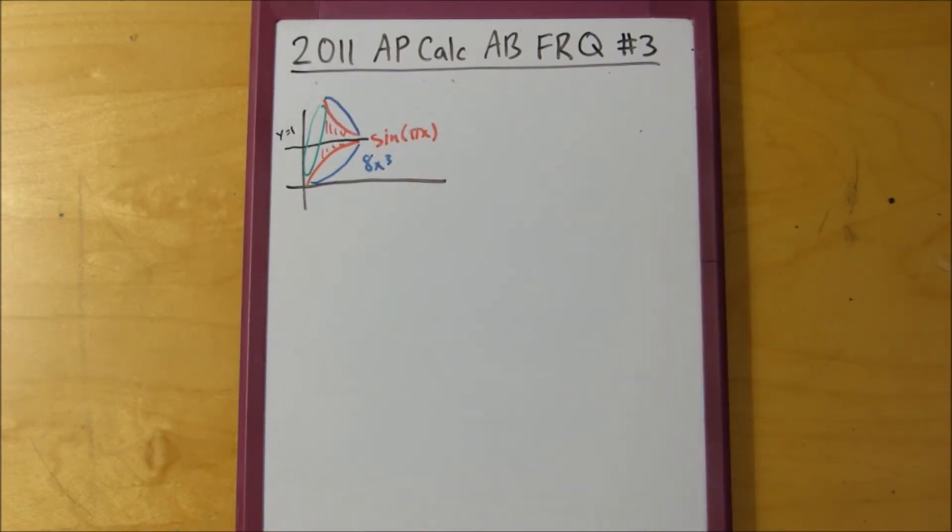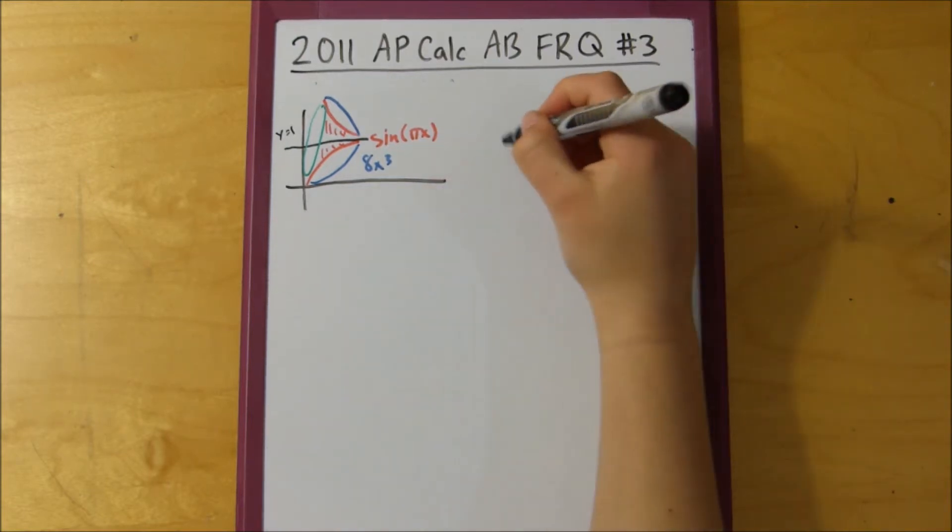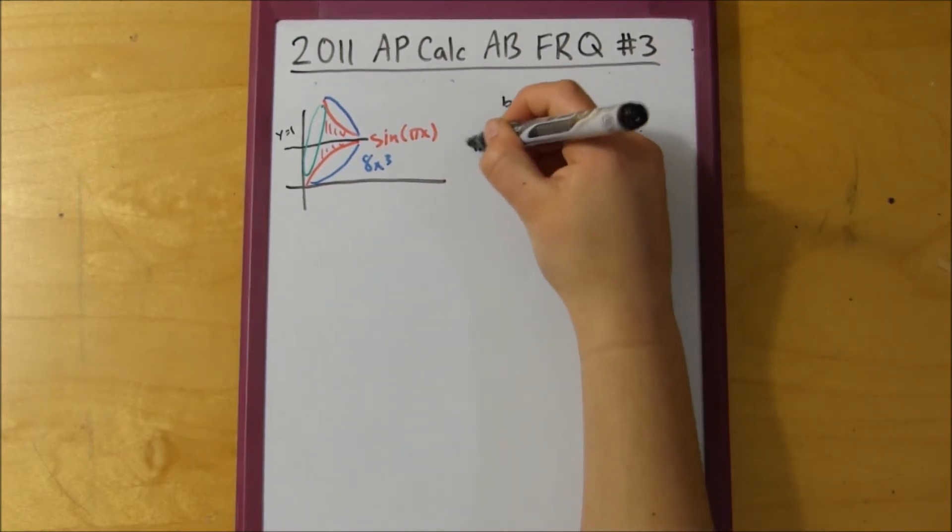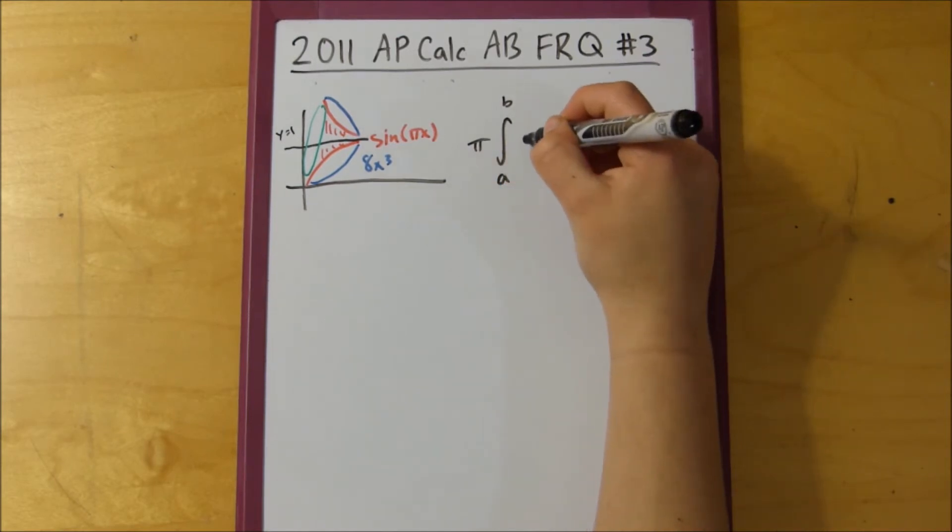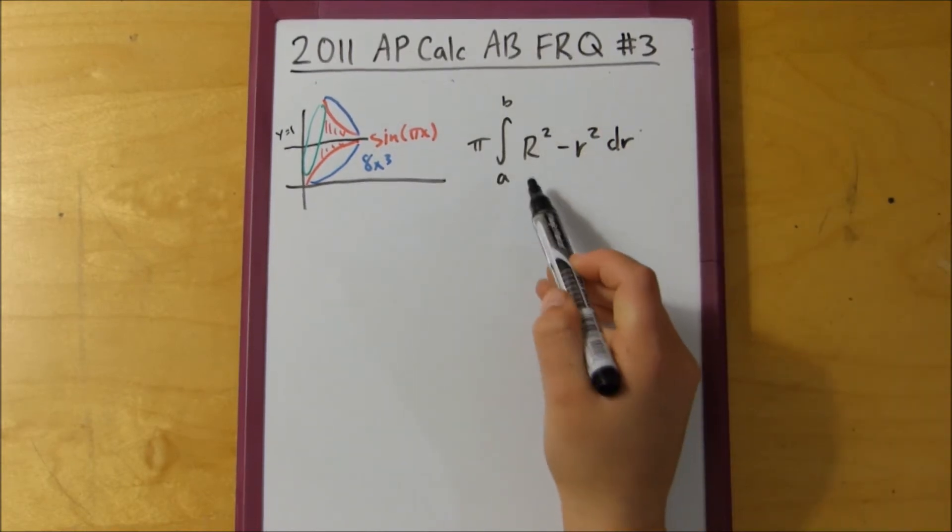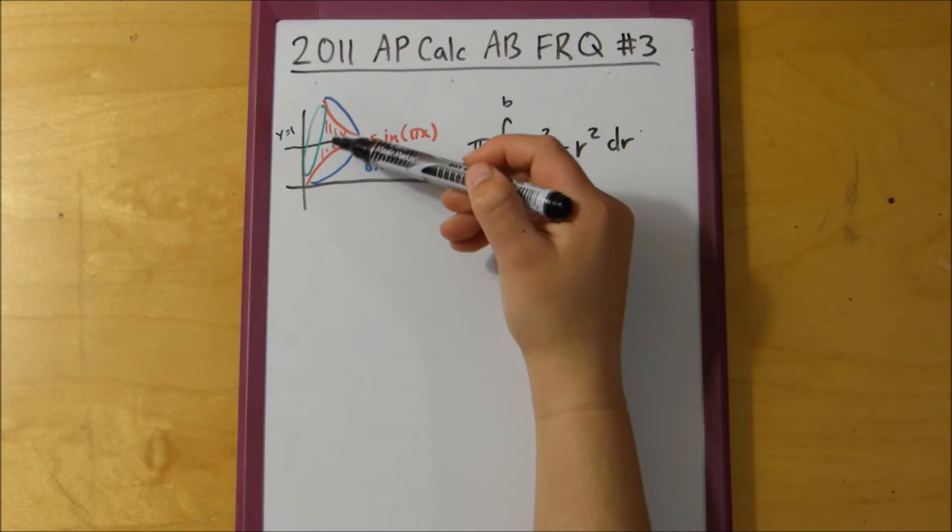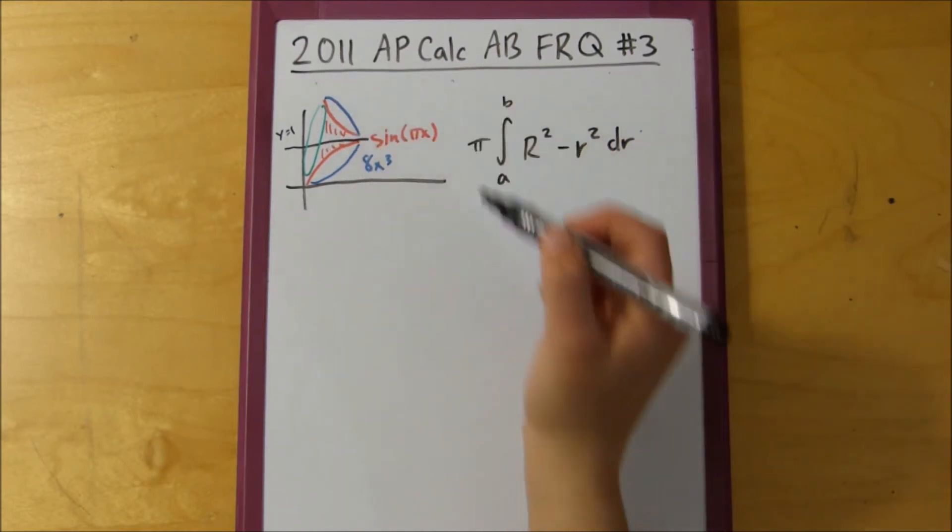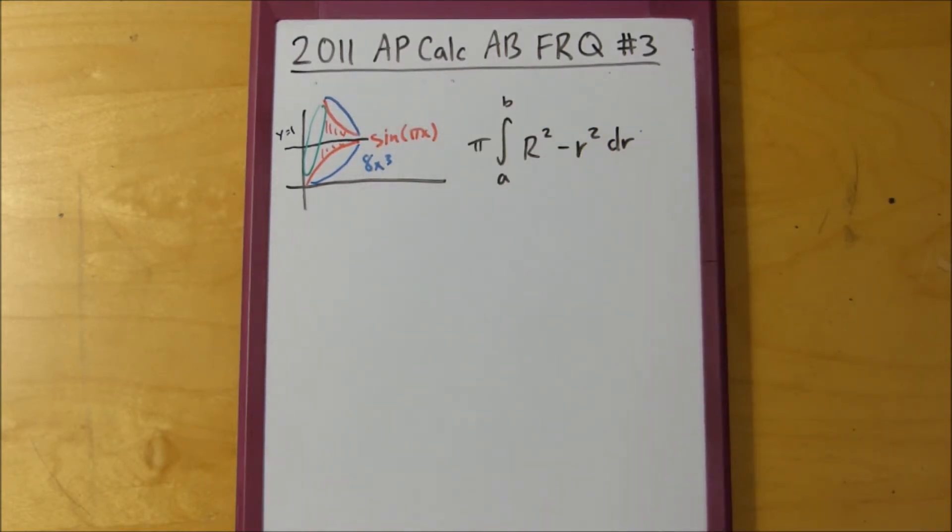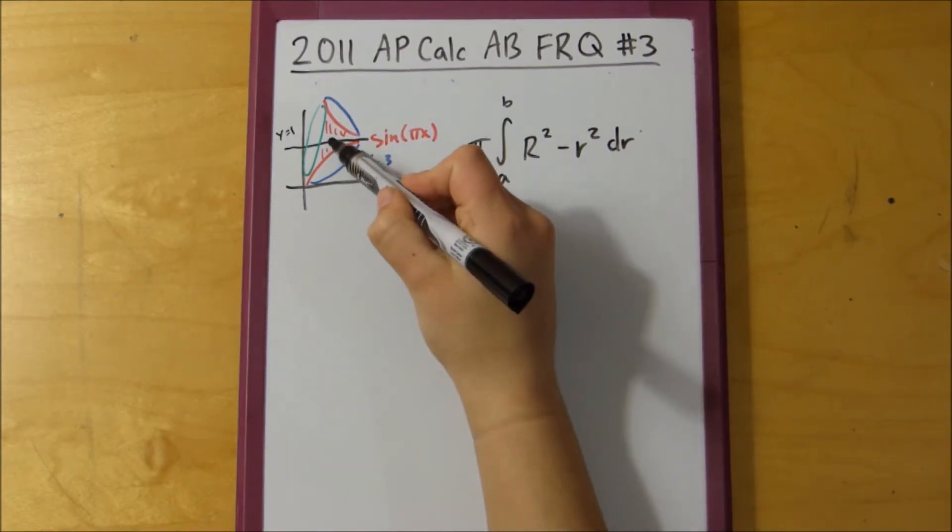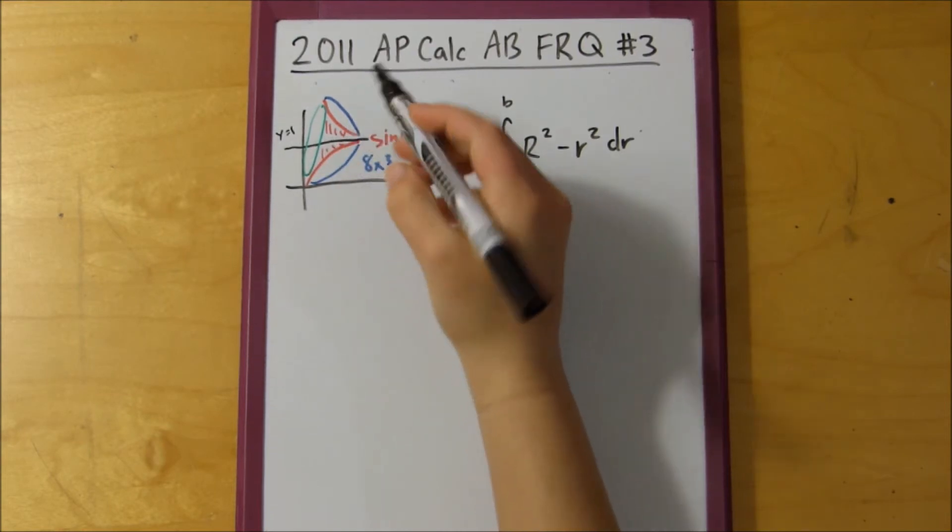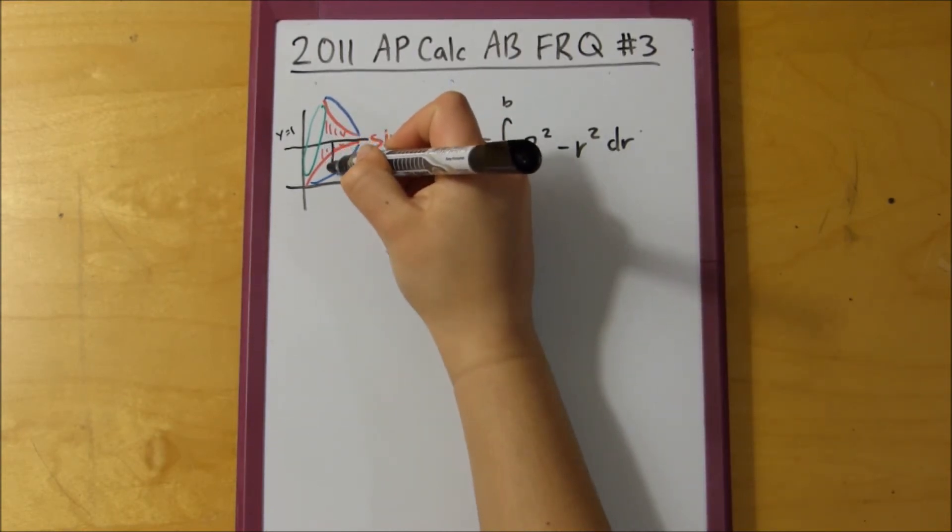So what we have to do is we have to find the volume of the outer shape, this outer shape, and then subtract this inner part. To do that, what we do is we're going to have to use pi times the integral from a to b of big R squared minus little r squared dr. Big R is the big radius. In terms of this problem, whenever I try to find the big radius, I just take the point or the line that you're rotating around and I draw a line until I hit the bottom curve.